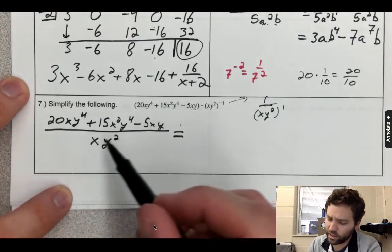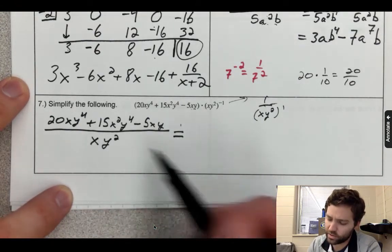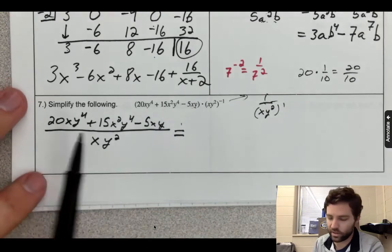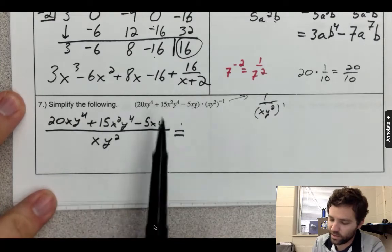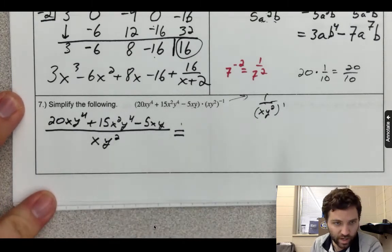So now instead of writing this out as several different fractions—this is kind of a shortcut, by the way—I'm going to take the first term divided by this, the second divided by that, and the third divided by that. I'm just going to write those out.